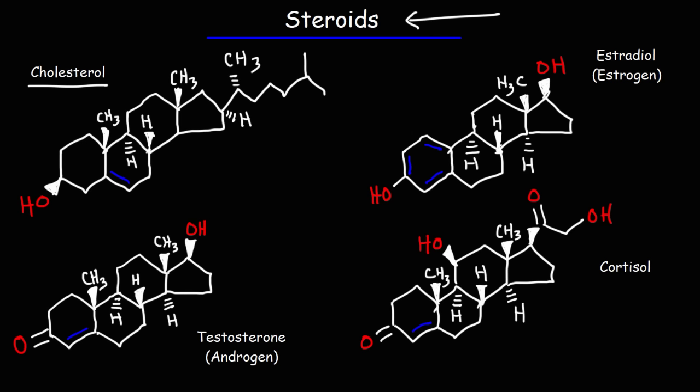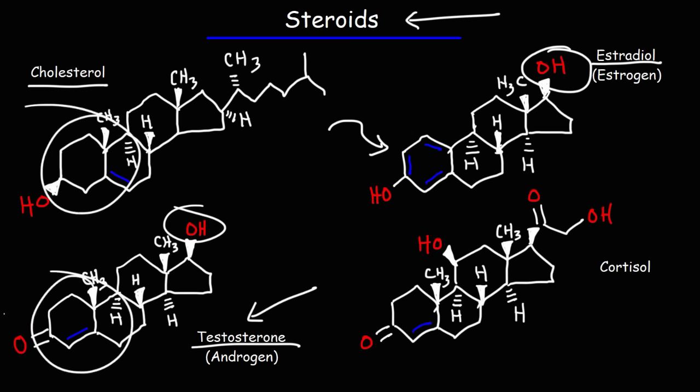On the upper right, we have estradiol, which is a type of estrogen, the primary female sex hormone. On the bottom left, we have testosterone, which is an androgen, and that is the primary male sex hormone. Estradiol and testosterone, they're chemically similar. Besides both having four fused rings, estradiol and testosterone both have this hydroxy group at the top. But estradiol really stands out due to the presence of this aromatic ring. Which is not present in testosterone or in cholesterol.